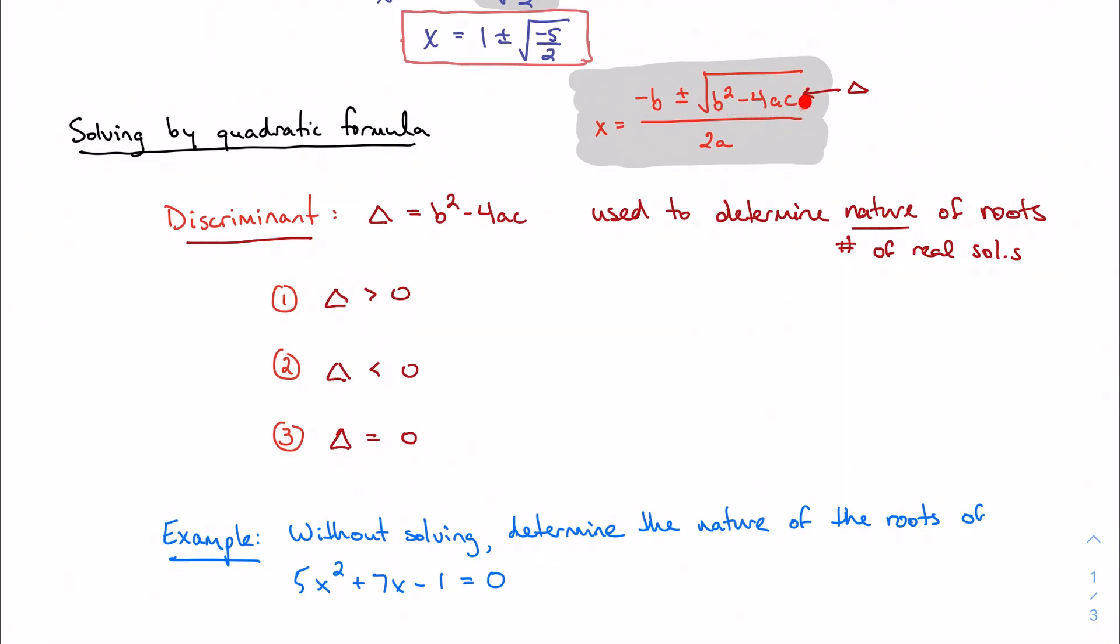If my discriminant is positive, so I've got a positive number here under the square root, then I can get two distinct answers. I can get negative b plus the square root of the discriminant, and negative b minus the square root of the discriminant. So this is going to give me two real solutions, two distinct real solutions. So I'm just going to say that they are distinct or unique solutions.